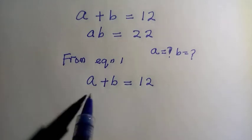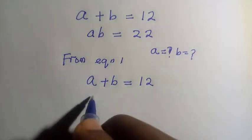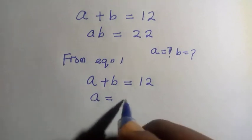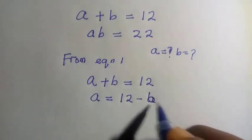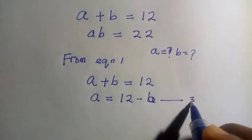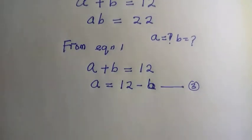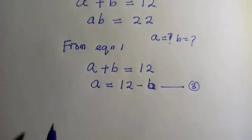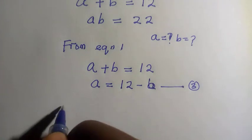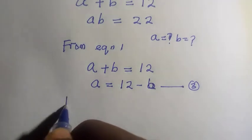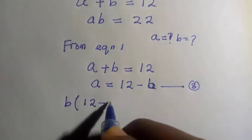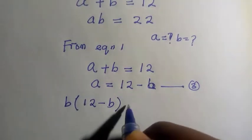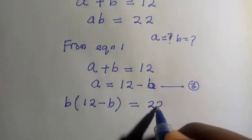From here, we make A the subject of the formula so that we have A equals 12 minus B. We call this equation 3. Then we substitute equation 3 into equation 2 and we have B multiplied by bracket of 12 minus B equals 22.